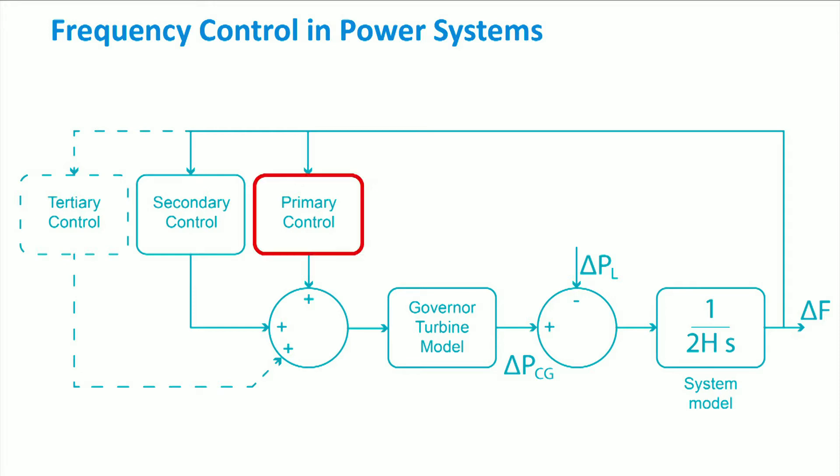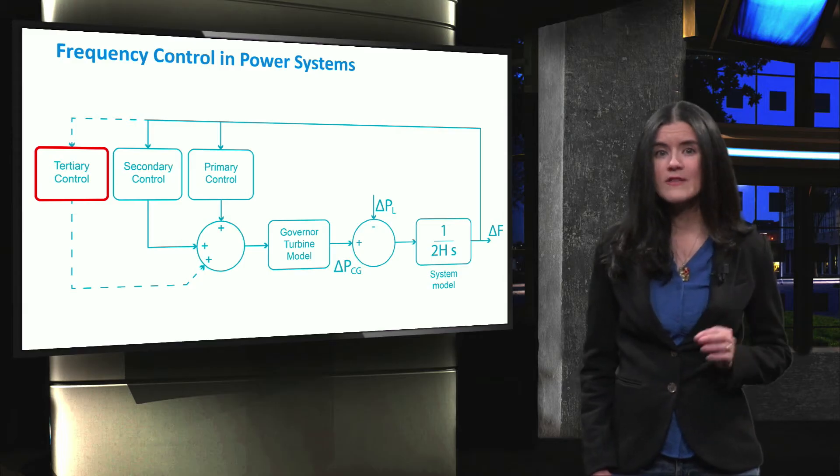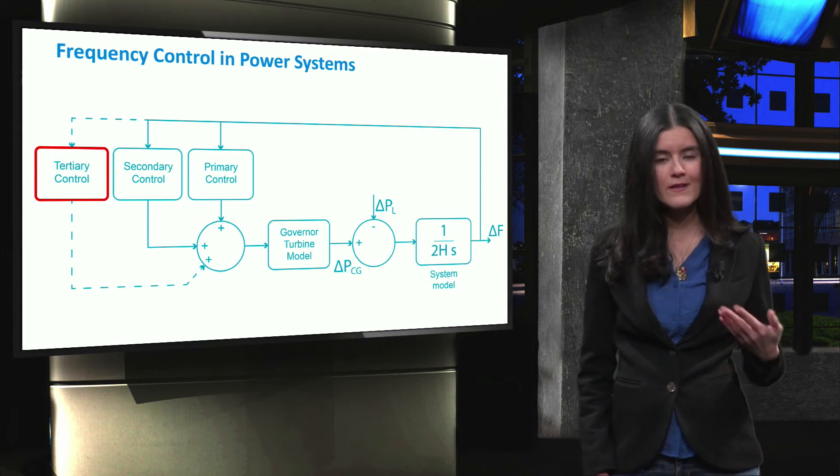In a nutshell, primary control is in charge of keeping the active power balance, secondary control is in charge of restoring the frequency and the power change between different areas of the network. Finally, tertiary control is used to restore a sufficient secondary control volume. We will cover each of these control mechanisms in more detail in the coming videos.